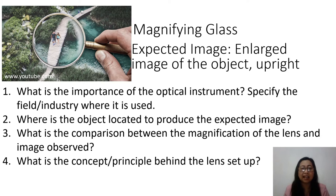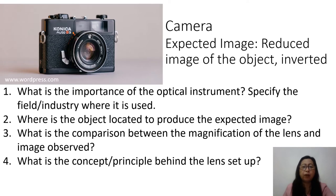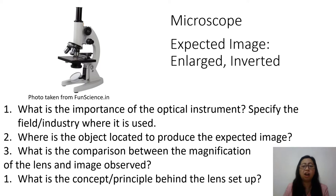Each group will be assigned one optical instrument with an expected image and set of questions to be answered. For example, magnifying glass — expected image: enlarged and upright image of the object. Questions include: What is the importance of the optical instrument? Specify the field or industry where it is used. Where is the object located to produce the expected image? What is the comparison between the magnification of the lens and the image observed? What is the concept or principle behind the lens setup? For photocopier, the expected image is same size as the object but inverted. For camera, the expected image is reduced and inverted. For projector, the expected image is enlarged and inverted. For microscope, the expected image is enlarged and inverted.